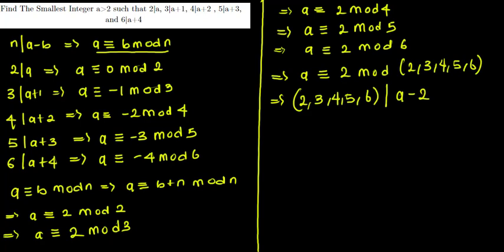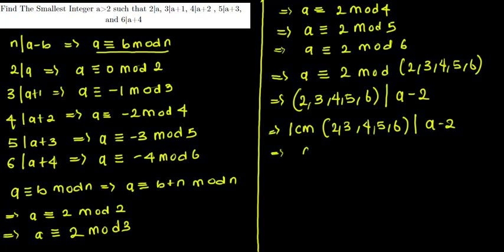For each of these numbers to divide a minus 2, a minus 2 must be a common multiple of all of them. By the definition of LCM, the least common multiple must also divide that common multiple. The LCM of 2, 3, 4, 5, and 6 is 60, so 60 divides a minus 2.